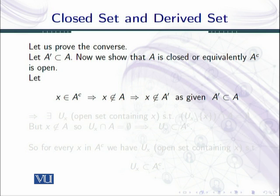Let us take an element from the complement. X belongs to the complement of A. This implies that X does not belong to A. So if X is not an element of A, but our condition is that the derived set of A is a subset of A, it means that X is not a limit point of A — that is, X does not belong to the derived set.